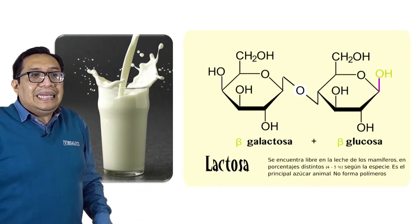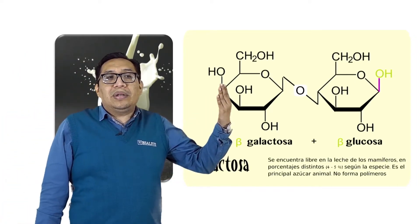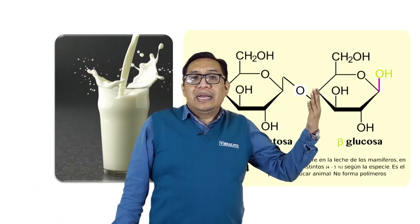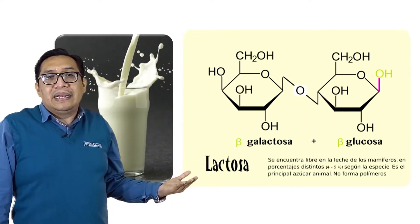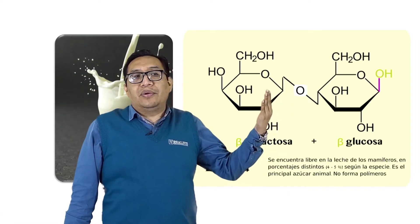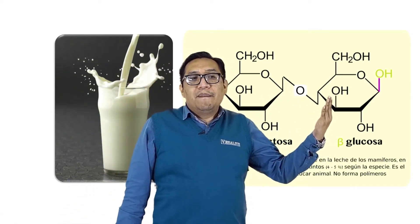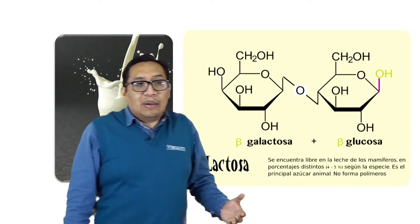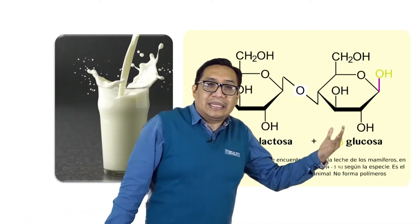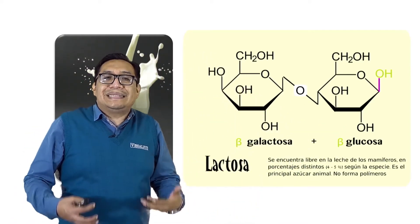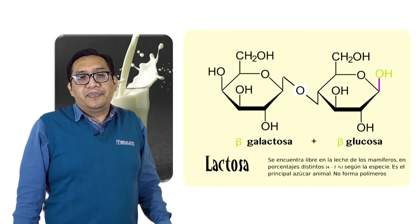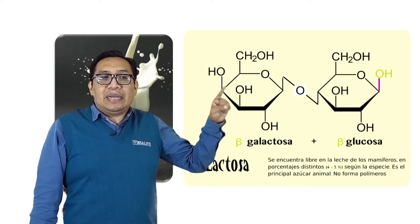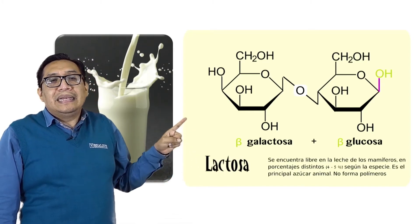La lactosa es también un disacárido, pero está formado por una molécula de galactosa y una glucosa. Galactosa más glucosa es igual a lactosa. La galactosa participa con su carbono 1 y la glucosa con su carbono 4, y el enlace es un enlace beta. Por eso, la unión de galactosa y glucosa mediante enlace beta 1-4 es la lactosa. La lactosa sí se encuentra libre, en la leche de los mamíferos, a diferencia de la galactosa, que no se encuentra libre como monosacárido, sino que hay que obtenerla a partir de la rotura o hidrólisis de la lactosa.